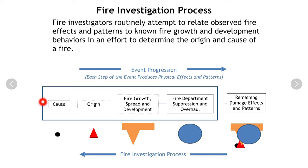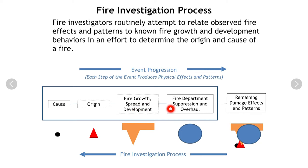If we look at an event progression, the event starts with cause — a first fuel and ignition source come together to start a fire. That generates an exposure in our area of origin, and the fire continues to grow and develop and spread beyond that area. Hopefully the fire department responds, puts the fire out, and conducts overhaul operations. That is our event progression, and what it leaves us with is a set of damage effects and patterns for us to look at as fire investigators.